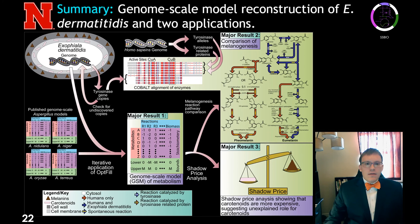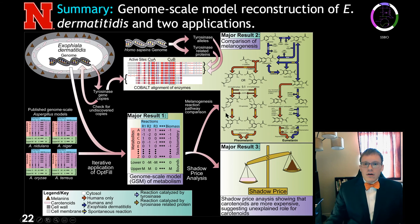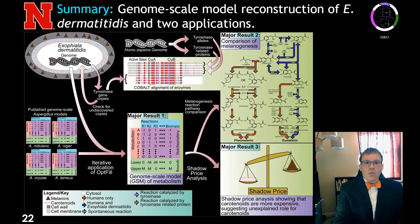In summary, we used the Exophiala genome and published genome-scale Aspergillus models to produce a genome-scale model of Exophiala metabolism. This model was subjected to a shadow price analysis to better understand the cost and roles of carotenoids and melanins in polyextreme tolerance. We also compared the melanogenesis pathways of humans and Exophiala, as well as the key enzyme tyrosinase between the two species, concluding that Exophiala would be a useful model system for modeling human melanogenesis.